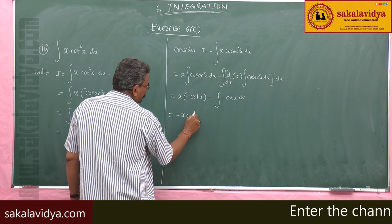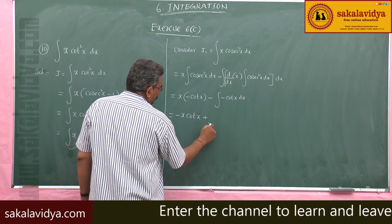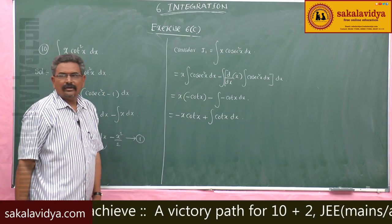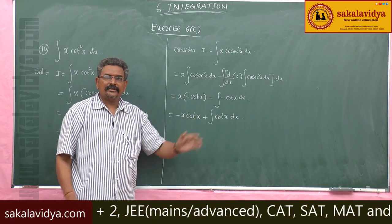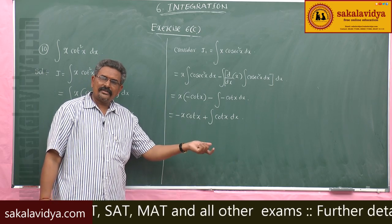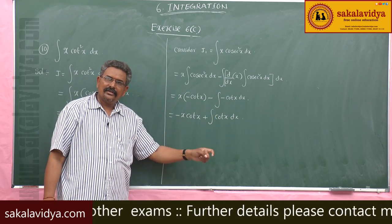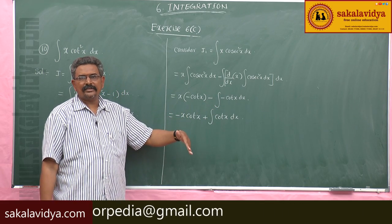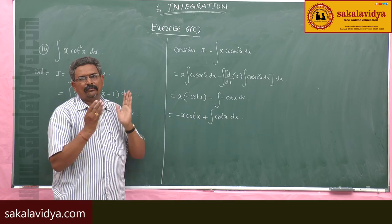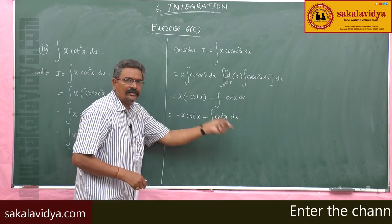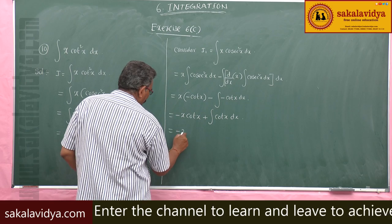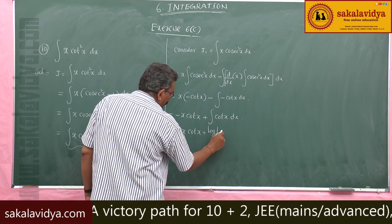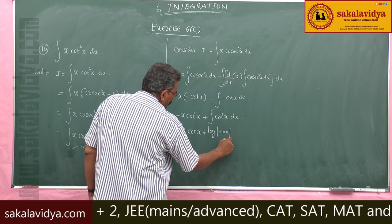This gives −x·cot(x) + integral of cot(x) dx. The integral of cot(x) dx is a standard result: since cot(x) = cos(x)/sin(x), and cos(x) is the derivative of sin(x), we get log|sin(x)|. So I₁ = −x·cot(x) + log|sin(x)|. Call this equation 2.